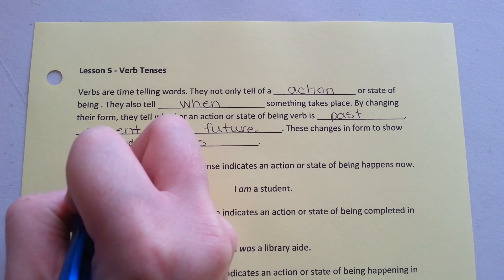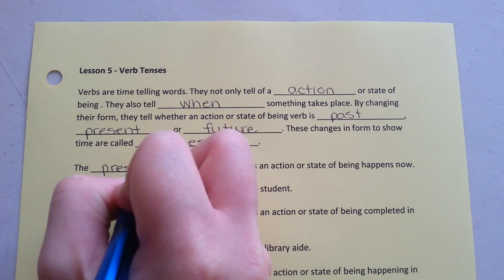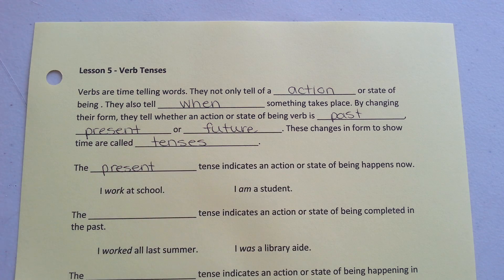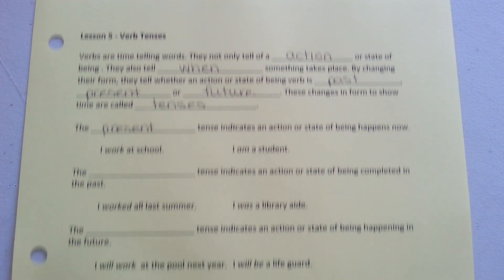The present tense indicates an action or state of being that is happening now. For example: I work at school. I am a student.